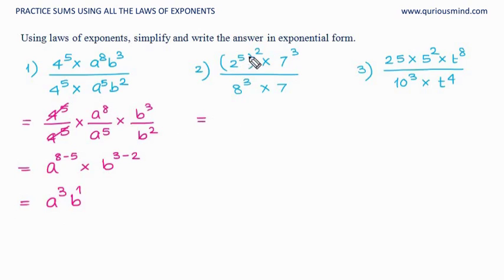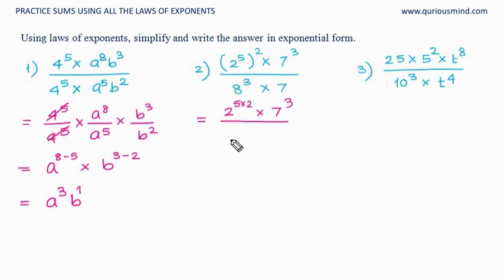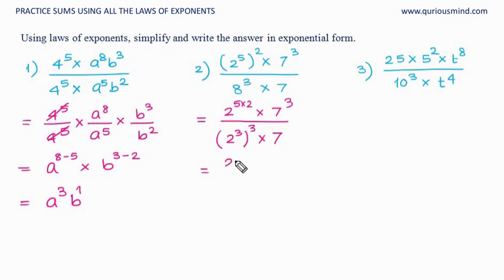First, 2 raised to 5 raised to 2 means 2 raised to 5 into 2, which is 2 raised to 10. Then multiplied by 7 raised to 3, upon 8 raised to 3. Now 8 raised to 3 is the same as 2 raised to 3 whole raised to 3. So 8 is written as 2 raised to 3, giving 2 raised to 9. So we have 2 raised to 10 upon 2 raised to 9, into 7 raised to 3 upon 7.